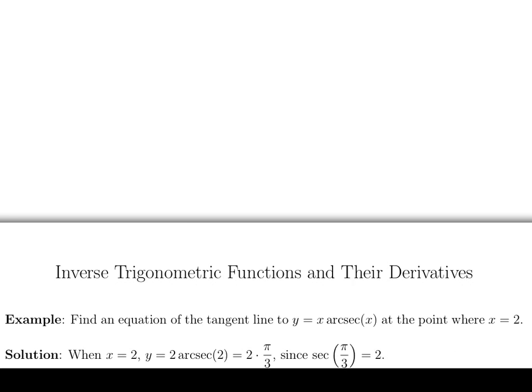Okay, so when x is equal to 2, y is equal to 2 arc secant of 2. Now arc secant of 2 is pi over 3. Well, why is that? That's because secant of pi over 3 is equal to 2.